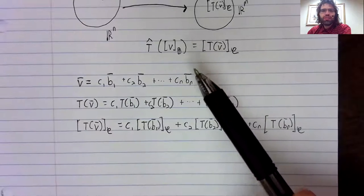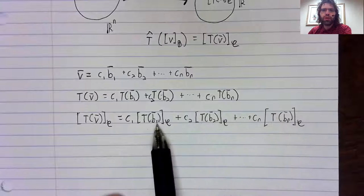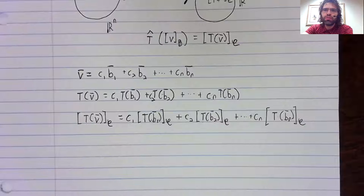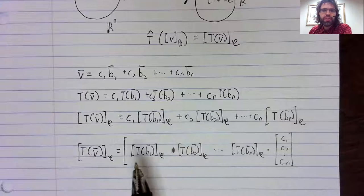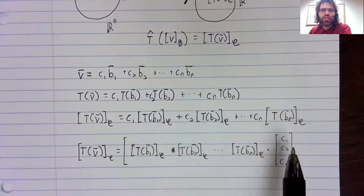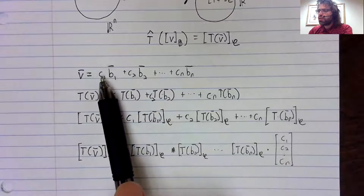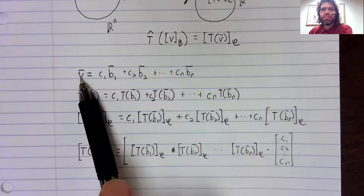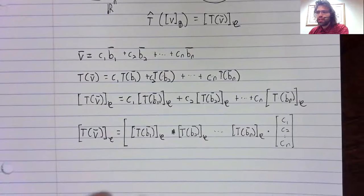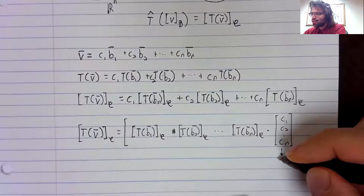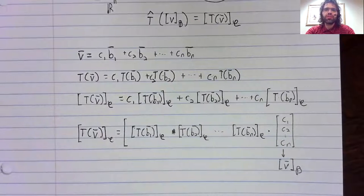Very well. Now, we want this to be linear. What we have here is a linear combination of vectors. And a linear combination of vectors is a matrix times a vector. And what is this vector? Well, this vector is telling you how to write V in terms of B1, B2, up to Bn. In other words, this vector is the coordinate vector of V with respect to B.